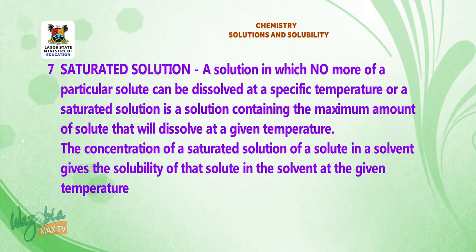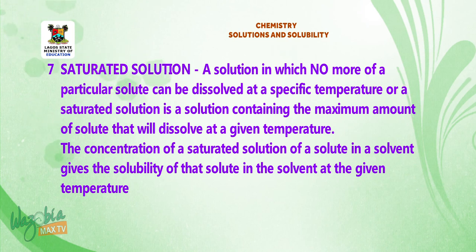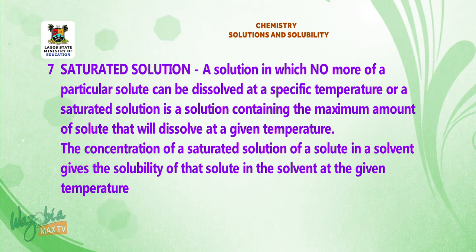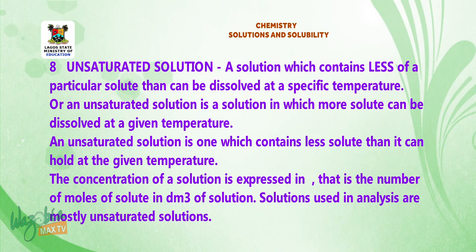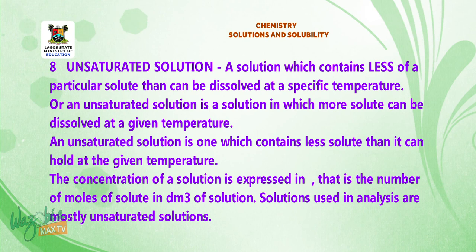Number 7: Saturated solution — a solution in which no more of a particular solute can be dissolved at a specific temperature; or a solution containing the maximum amount of solute that will dissolve at a given temperature. The concentration of a saturated solution in a solvent gives the solubility of that solute in the solvent at the given temperature. Number 8: Unsaturated solution — a solution which contains less of a particular solute than can be dissolved at a specific temperature; a solution in which more solute can be dissolved at a given temperature.